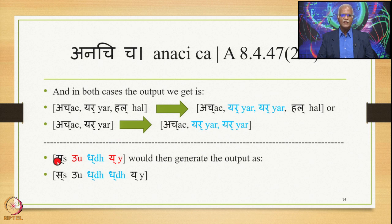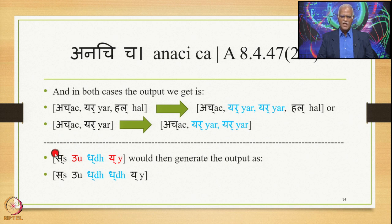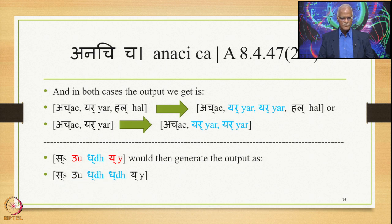In the case of Sudhyya as Purvapadha, we have S, then U (an Ach), then Dha (a Yer), then Yer (a Hal). This exactly replicates the sequence Ach, Yer, Hal. The prior S does not matter. So U, Dha, Yer are the Ach, Yer, and Hal respectively. Therefore 8.4.47 applies and generates optionally: S, U, Dha, Dha, Yer — Dha gets optionally reduplicated.